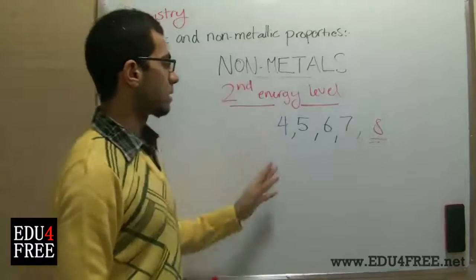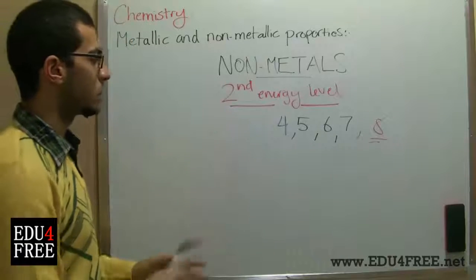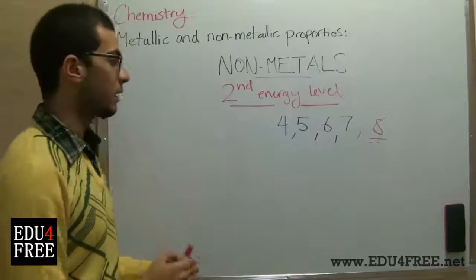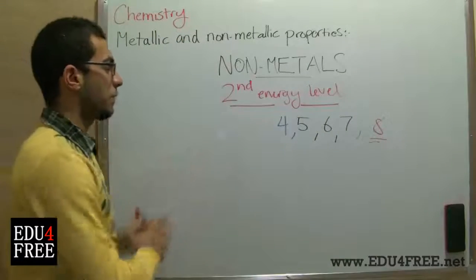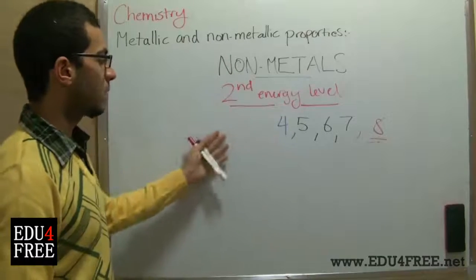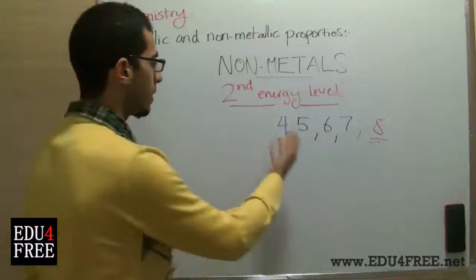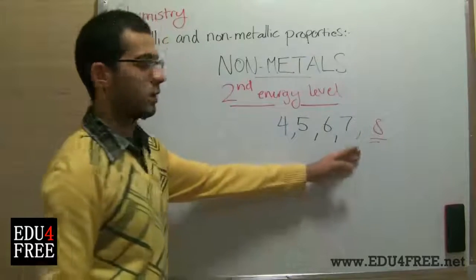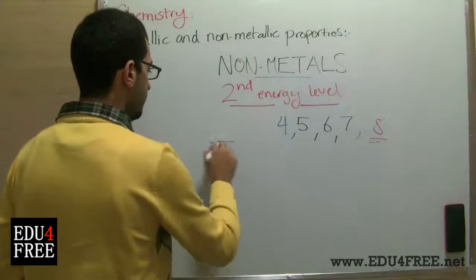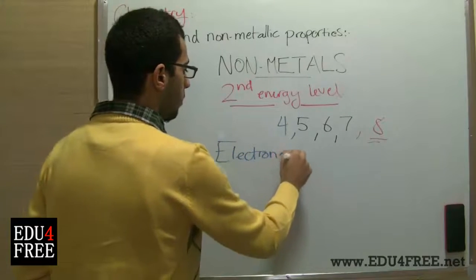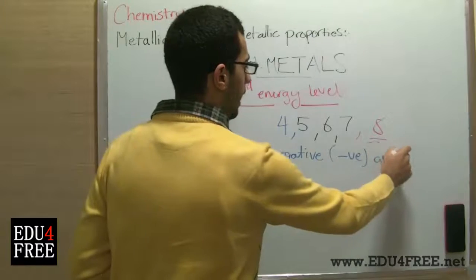Since nonmetals always have more than half of the capacity of the outermost energy level, they always tend to take electrons so that they can complete this energy level to reach stability. This is the opposite of metals — metals lose their few electrons to reach stability, while nonmetals complete the outermost energy level. And that's why they are considered electronegative, because they are always converted into negative ions or anions.